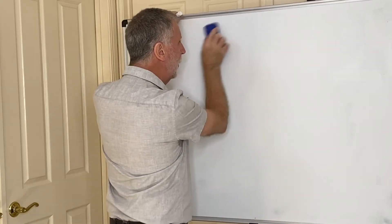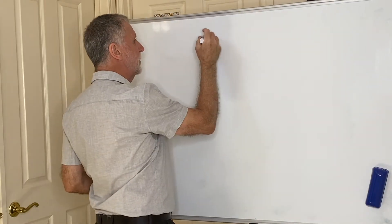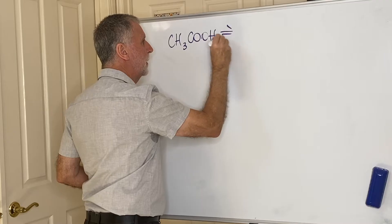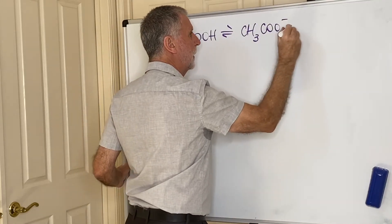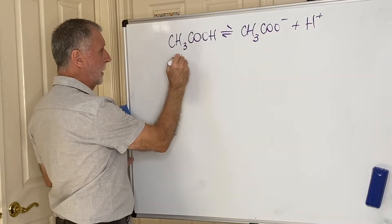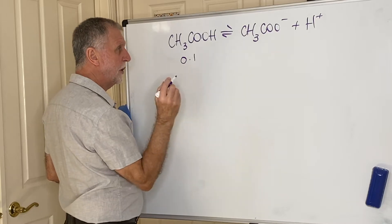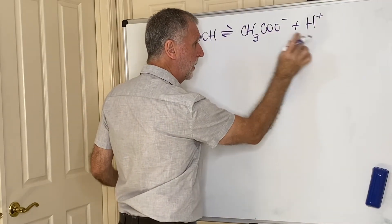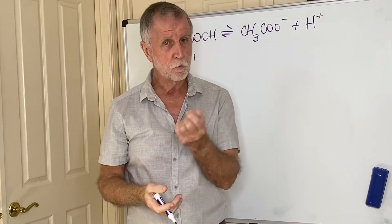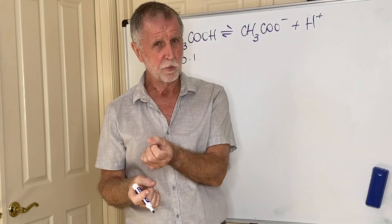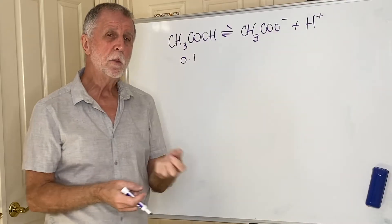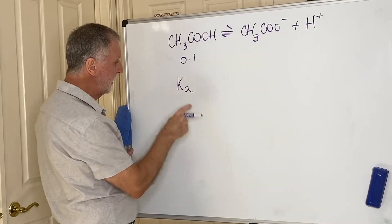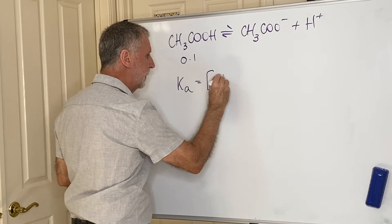Now that's all very well for a strong acid, but for a weak acid it's not so easy. Let's take the reaction where CH₃COOH becomes CH₃COO⁻ and H⁺. Starting with a 0.1 molar solution — whereas HCl had a single arrow meaning full dissociation — this time we know it only dissociates to a tiny extent. To calculate the H⁺ concentration we need extra data: the Ka value, which is just a Kc for an acid equilibrium.